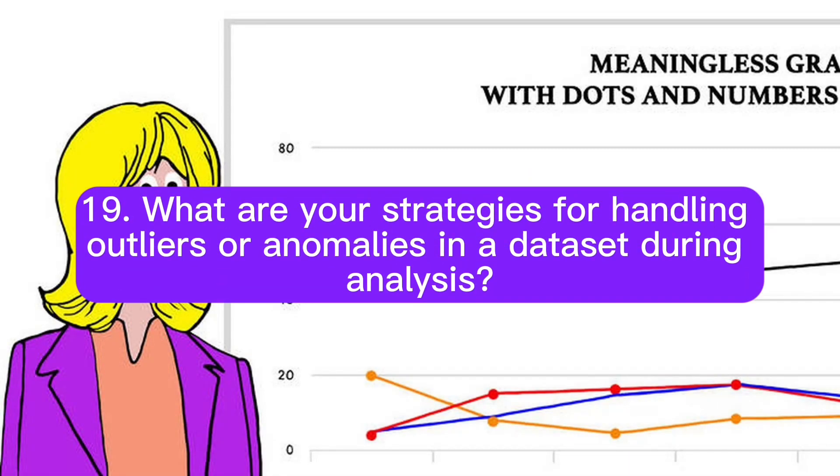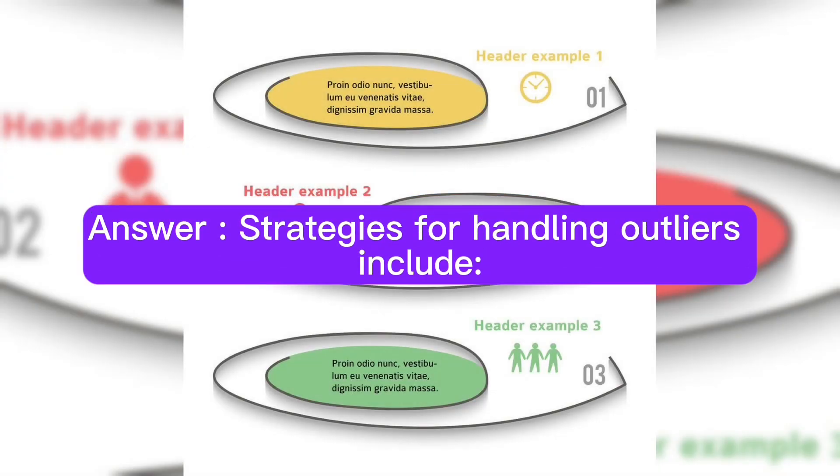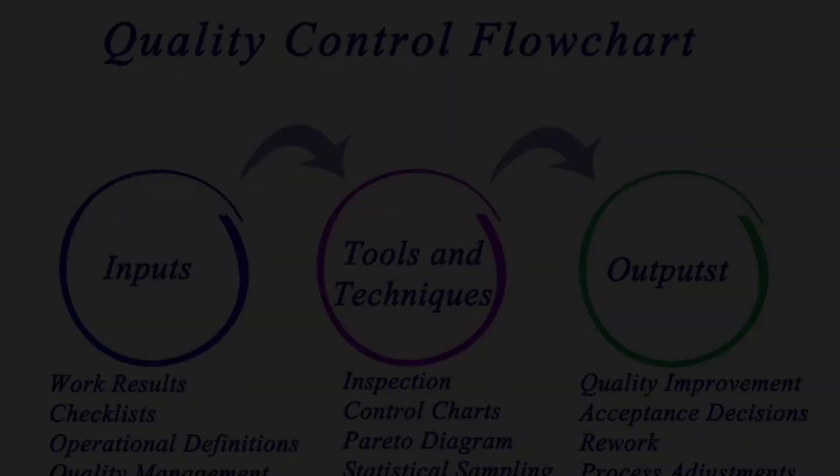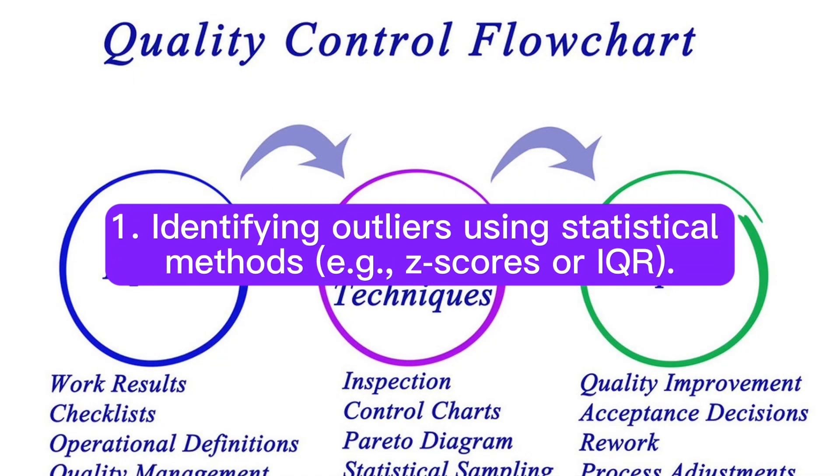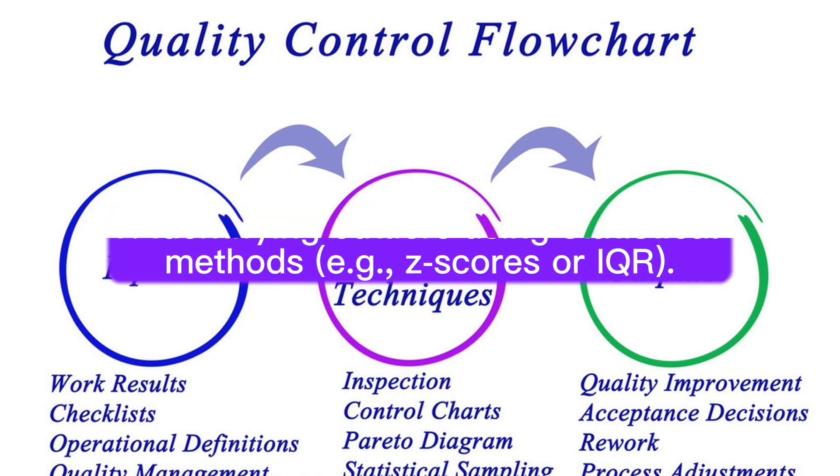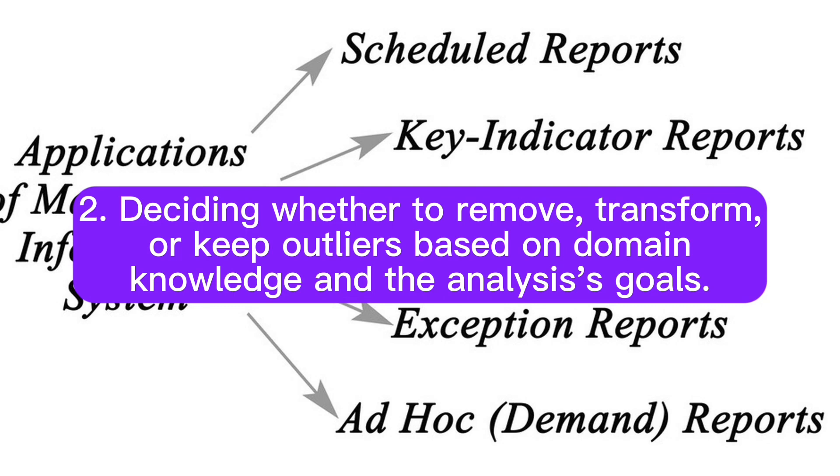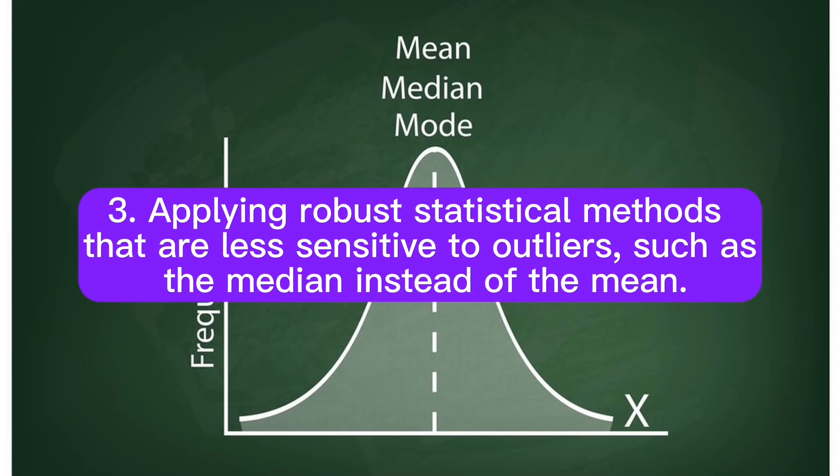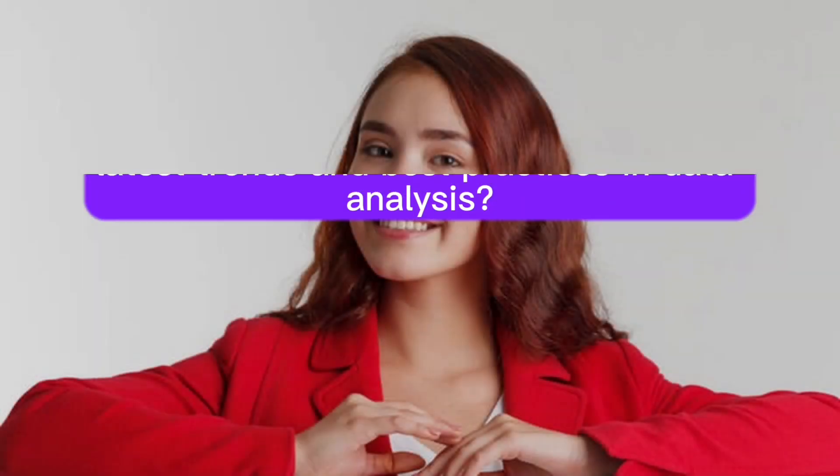Question 19: What are your strategies for handling outliers or anomalies in a dataset during analysis? Answer: Strategies for handling outliers include: first, identifying outliers using statistical methods, for example z-scores or IQR; second, deciding whether to remove, transform, or keep outliers based on domain knowledge and the analysis's goals; and third, applying robust statistical methods that are less sensitive to outliers, such as the median instead of the mean.